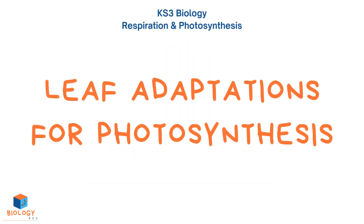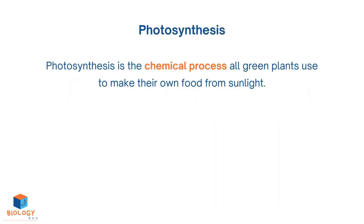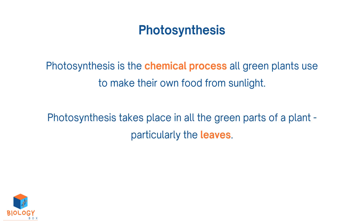Leaf adaptations for photosynthesis. Photosynthesis is the chemical process all green plants use to make their own food from sunlight. Photosynthesis takes place in all the green parts of a plant, particularly the leaves.